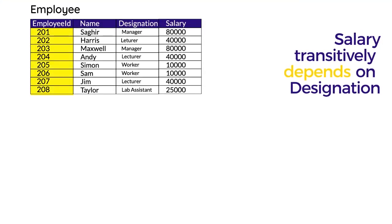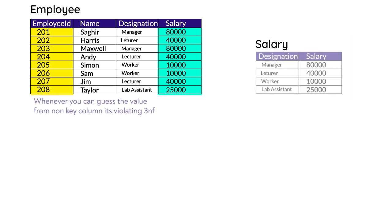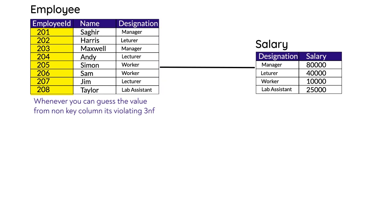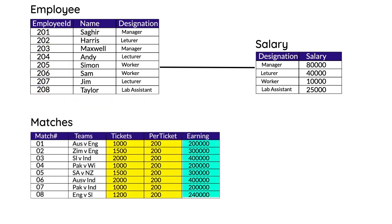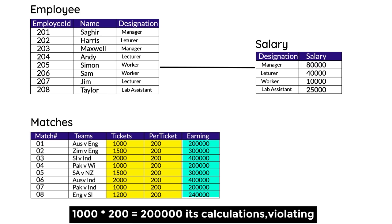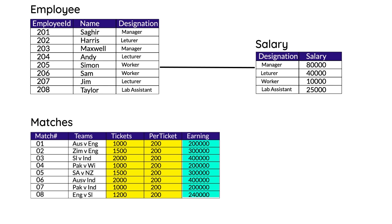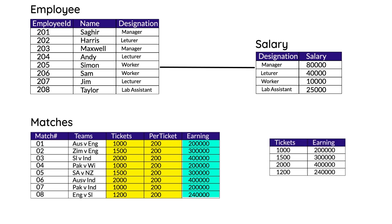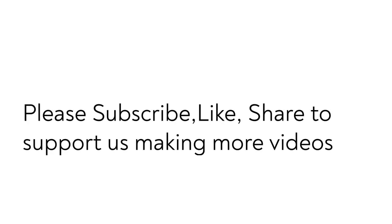In this table, if someone's designation is manager, the salary they'll get will be 80,000. In a database table, if there is any transitive dependency between non-key columns, we only break the part that is transitively depending on the other part. Transitive dependency also occurs when there is a kind of calculation performed in the table — like when the amount of earning is dependent on total ticket sales multiplied by the price of the ticket. This is also a transitive dependency: if a thousand tickets are sold and each ticket is 200, then the earning is 200,000. If any calculation can be performed on a table, it is also considered in third normal form.